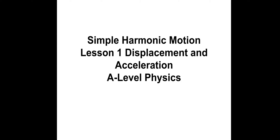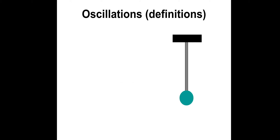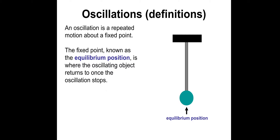Hi there, this is Simple Harmonic Motion Lesson 1: Displacement and Acceleration. So what is an oscillation? An oscillation is a repeated motion about a fixed point. This fixed point is known as the equilibrium position. This is where the oscillating object returns to once the oscillation stops.